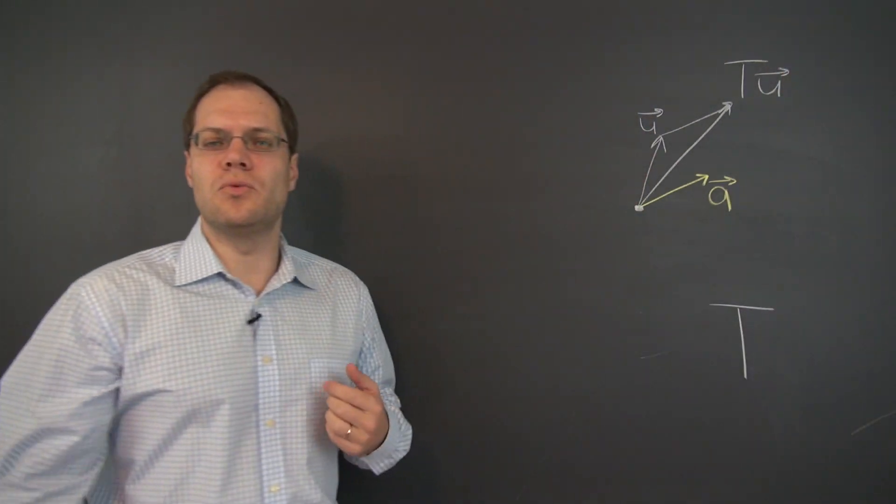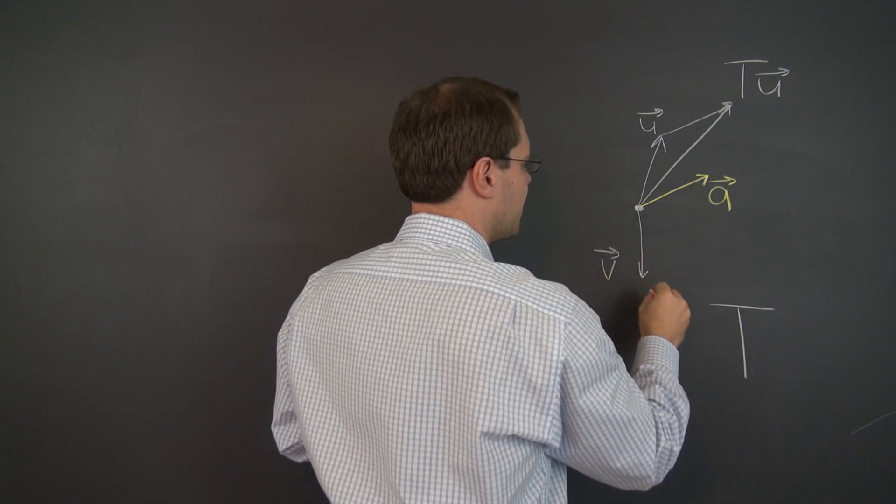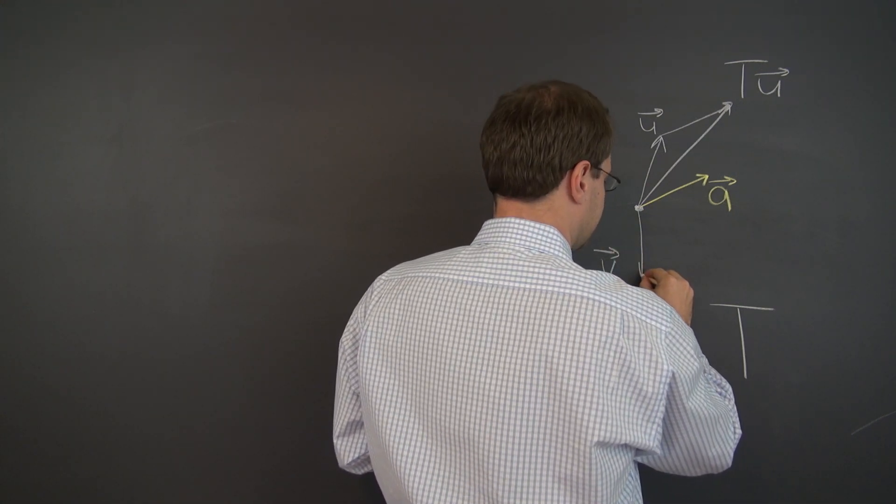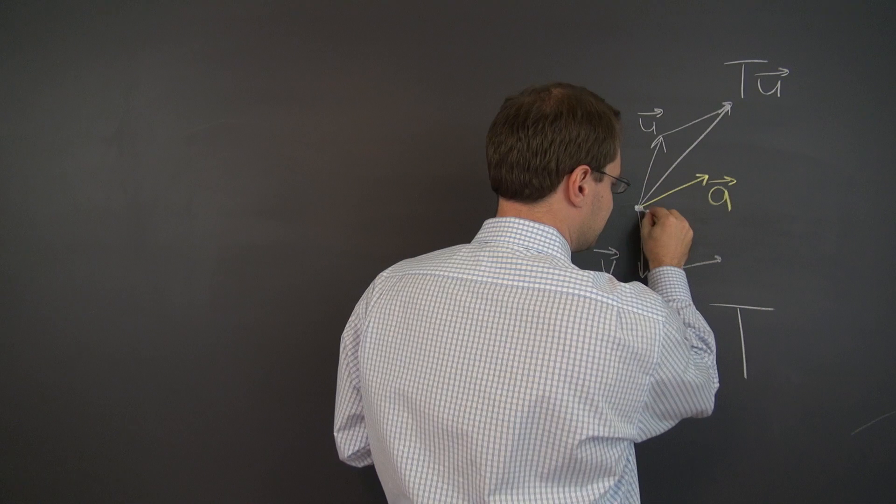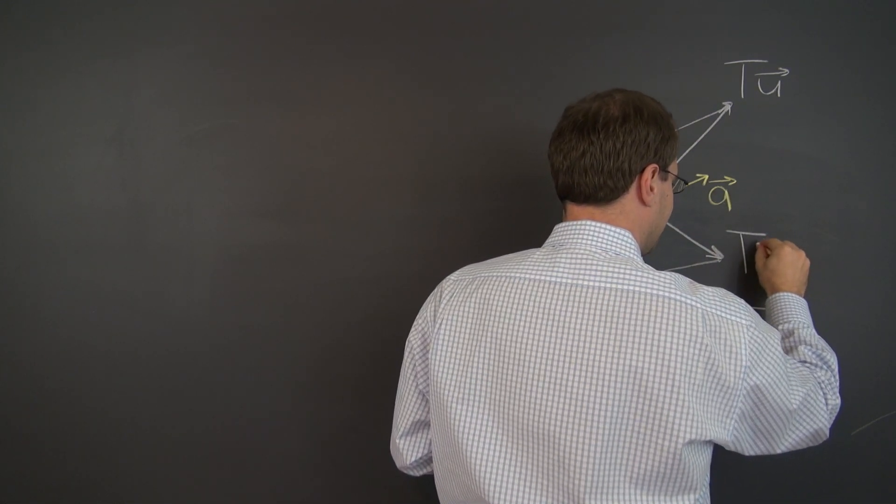Let's apply it to one more vector. How about to this one? We'll call this one the vector v and translate it by the vector a. And the result is this vector right here. So this is t of v.